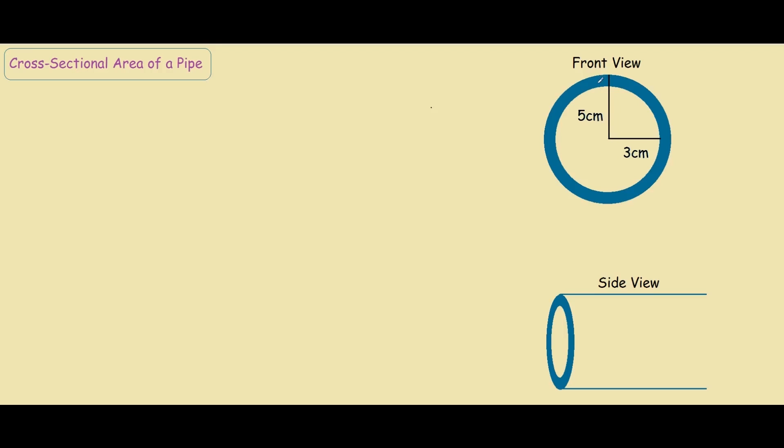So how we would find the cross sectional area, which is the highlighted blue section, is to find the area of the big circle with the 5cm radius and subtract it from the 3cm circle. And this difference will give us the area of the highlighted blue part.